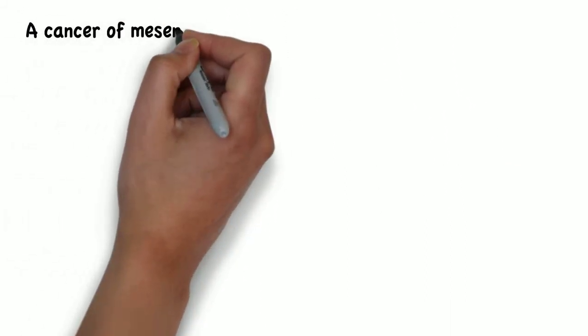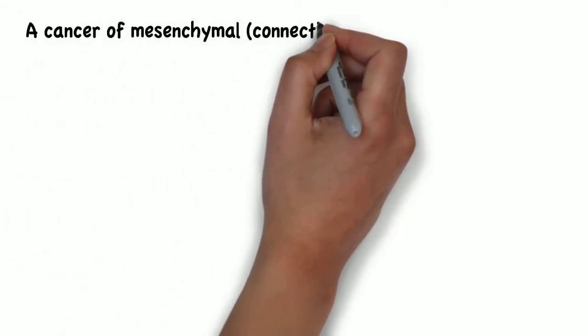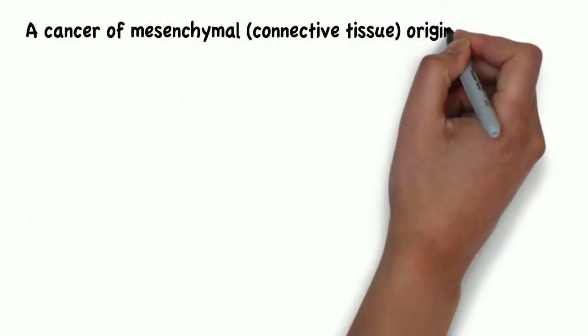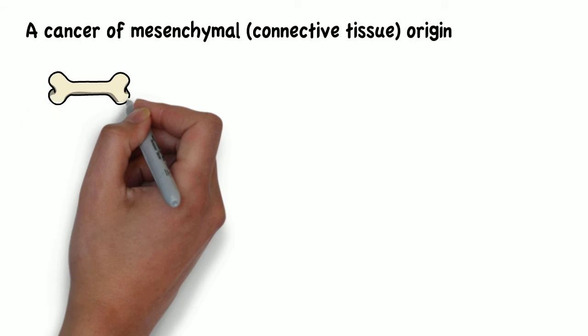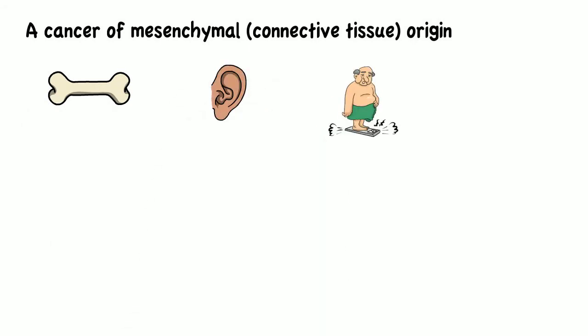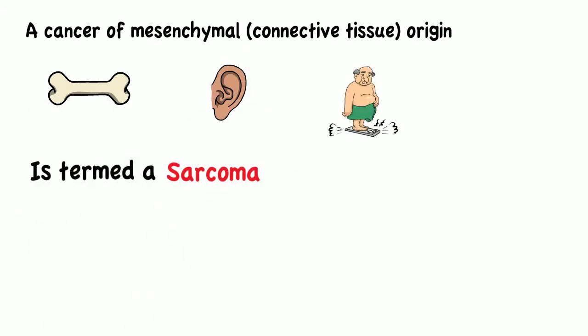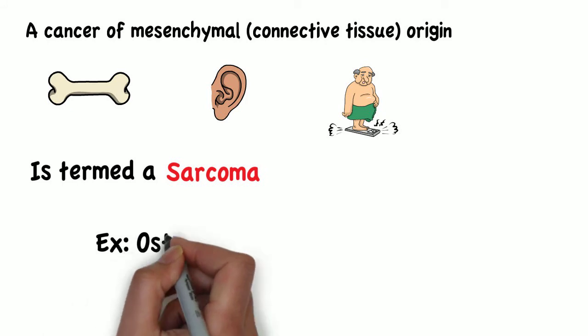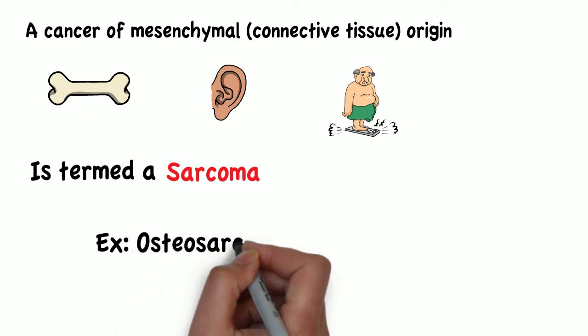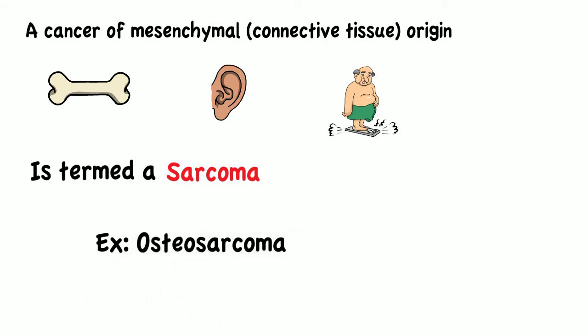A cancer of mesenchymal origin, such as bone, cartilage, or fat, is termed a sarcoma. An example of a sarcoma would be osteosarcoma, or cancer of the bone.